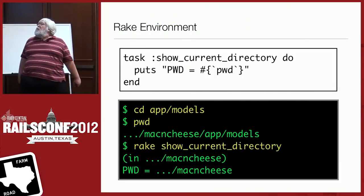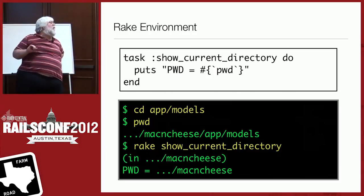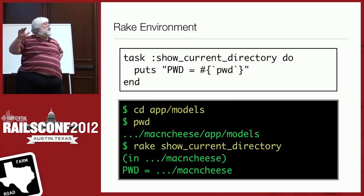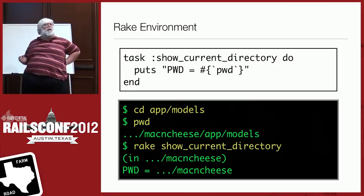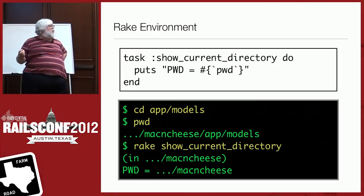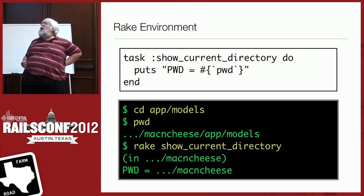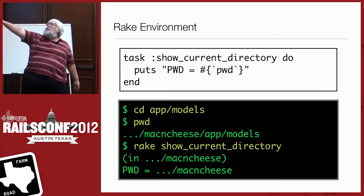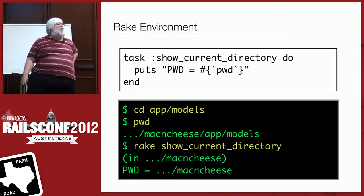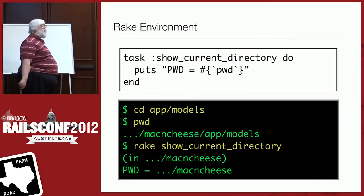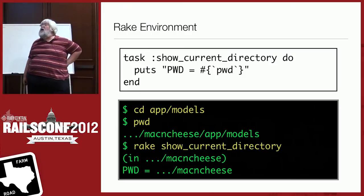Here we demonstrate this: we create a task called show_current_directory that runs `pwd` (print working directory). If we `cd` down into models and run `rake show_current_directory`, it reports the main project directory — not the models subdirectory. So it does in fact work as described.